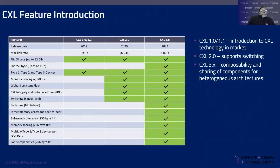CXL was introduced in 2019 and quickly gained ground because it was backward compatible with PCI Express — both the electrical layer and the protocol layer. It added a root complex integrated endpoint that allows one to immediately see the benefits of CXL. CXL 2.0 added hot-add, hot-remove, and some GPF flows, and introduced a single-layer switch as part of the CXL 2.0 standard.